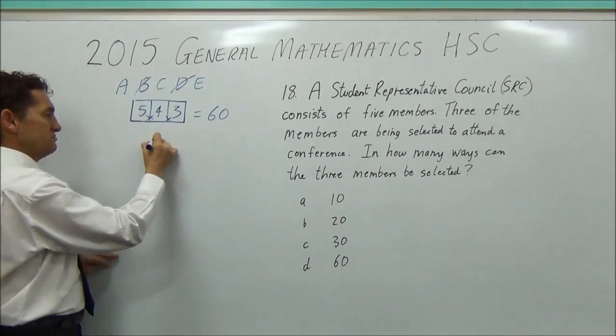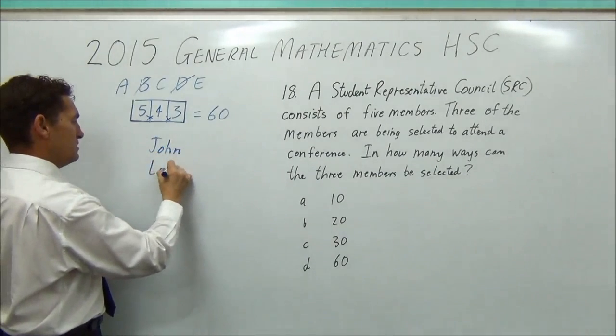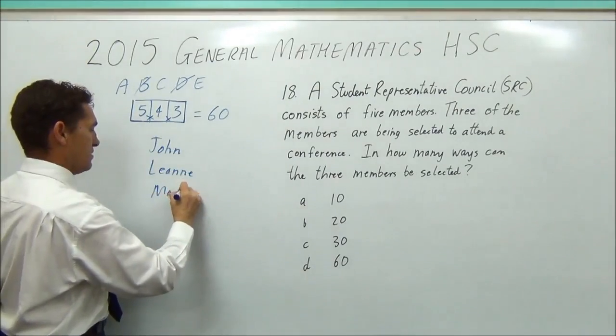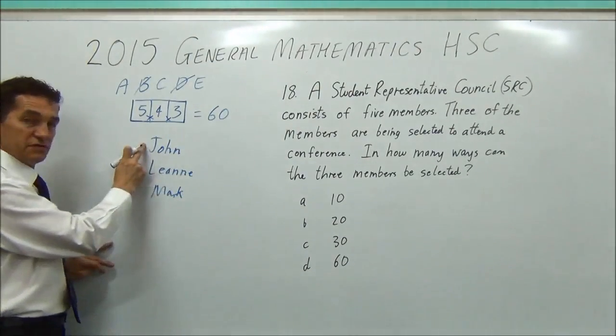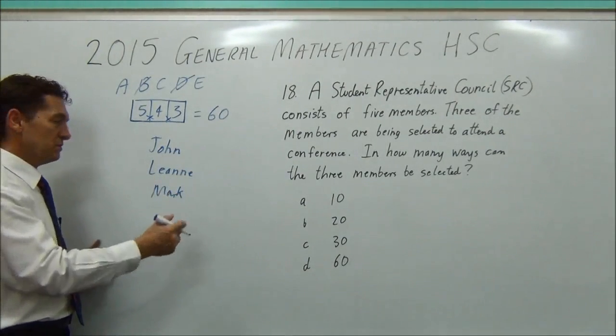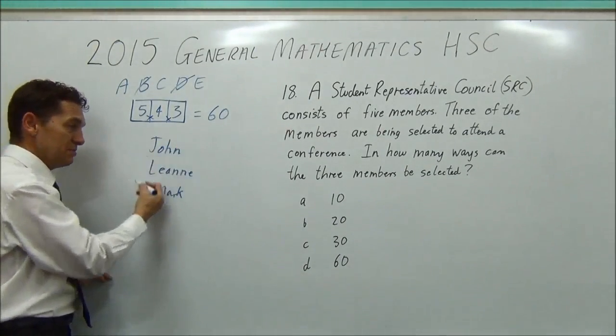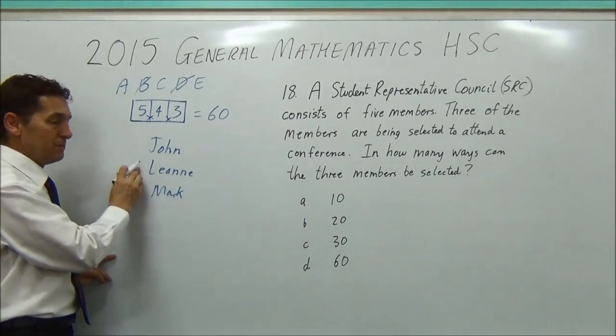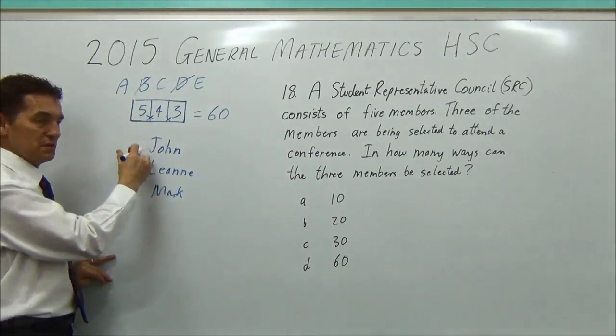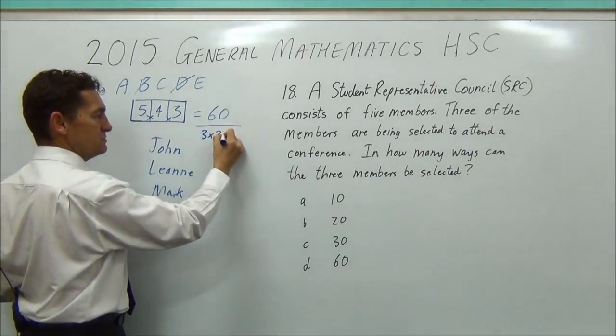But, so I chose John, Leanne, and Mark. So I chose those three. And I picked John first, then Leanne, then Mark. And I send them away to the conference. Well, what's the difference if I'd have picked Leanne first, then Mark, then John? Nothing. Because I still end up with the same three people. So once you've got the three, it doesn't matter which order you've picked them in.